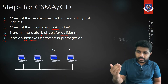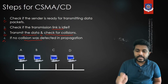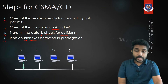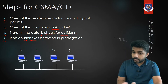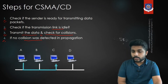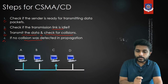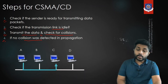Suppose device A has some data to send. Following the four steps, A will first sense the channel. After sensing, if A finds the channel is idle, A will send data to device C.